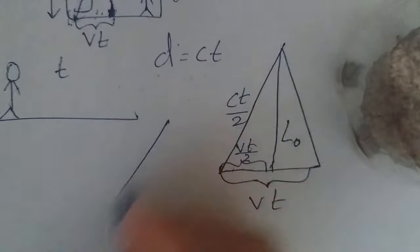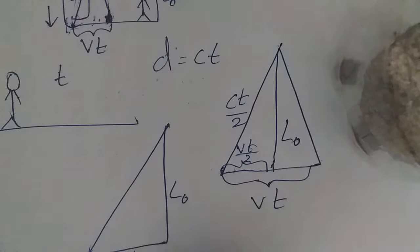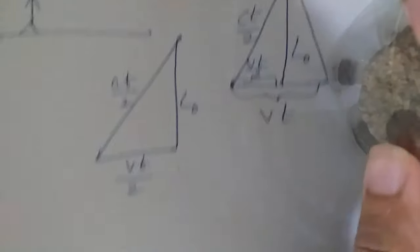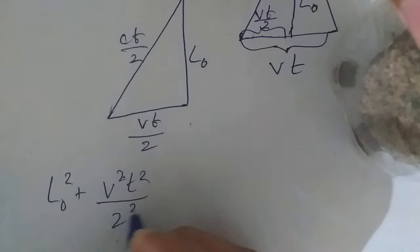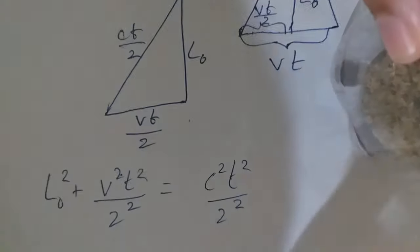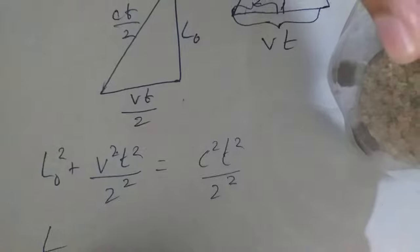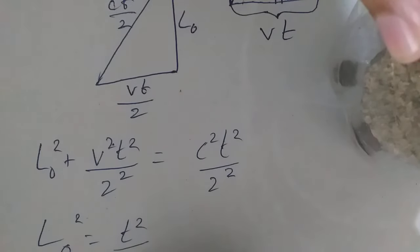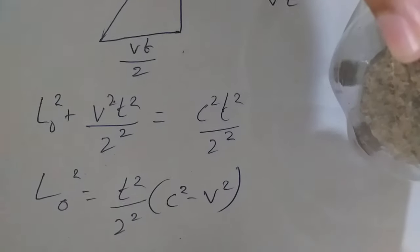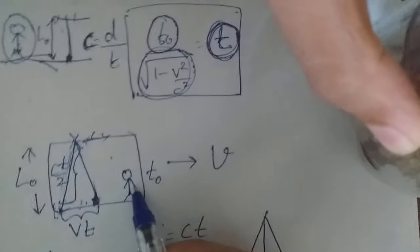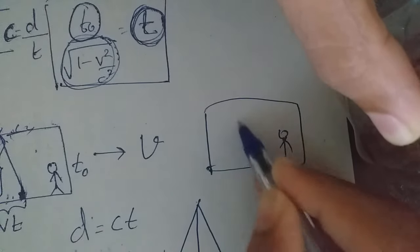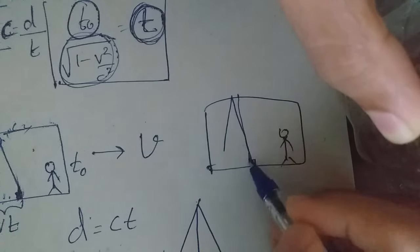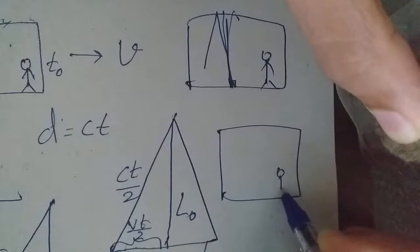L0 squared plus v squared t squared by 2 squared equals c squared t squared by 2 squared. We turn 1 square by 2 square into c square minus v square.